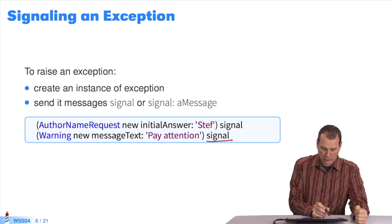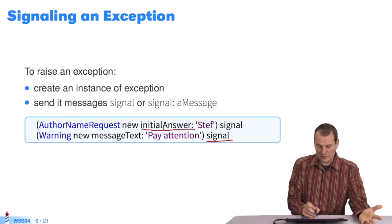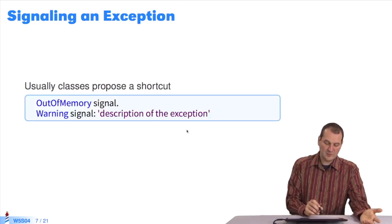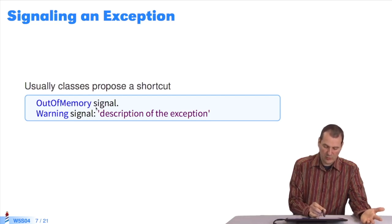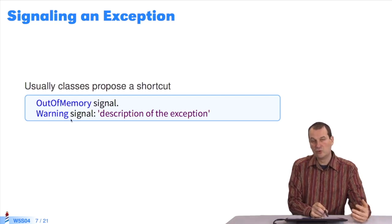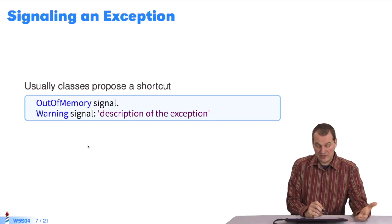When you have an exception and want to ask the author writing the method, you'll have another API, because it's the author name request that defines this API — so I pass 'steph', then do signal. What usually happens is that classes propose shortcuts to avoid having to create manually. So instead of 'Warning new blah blah', I do 'Warning signal' with the text, because it's shorter. But that depends on your exceptions.